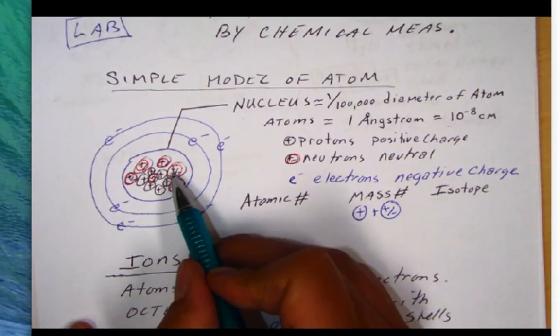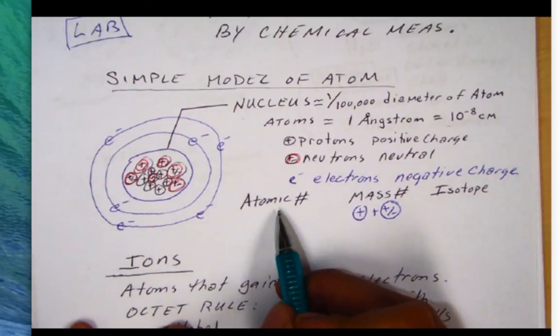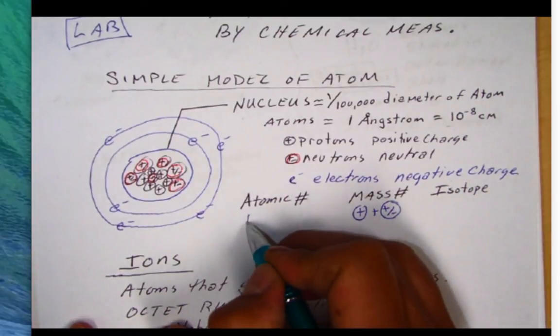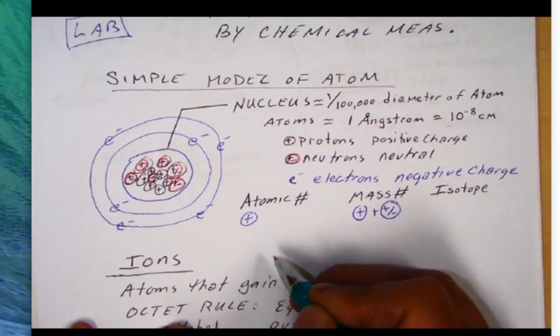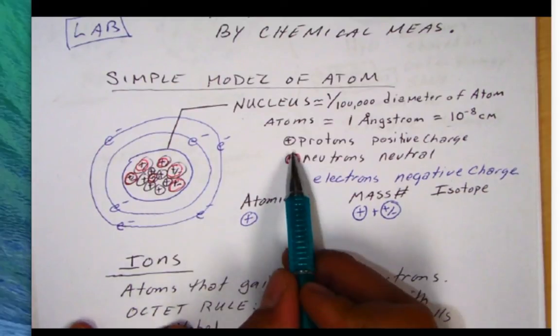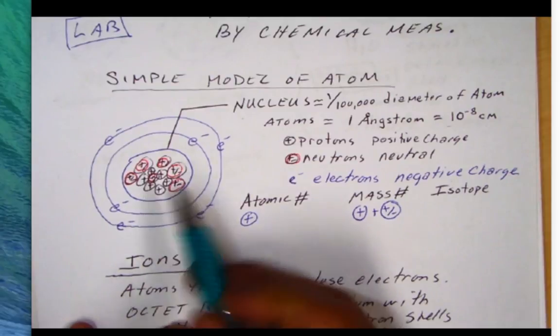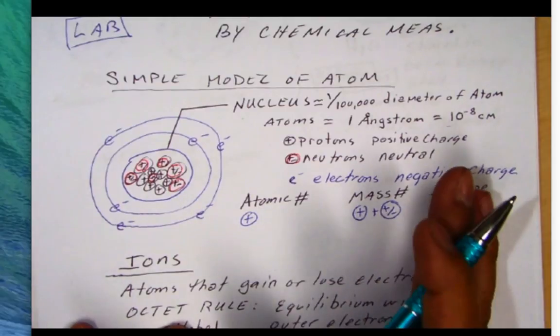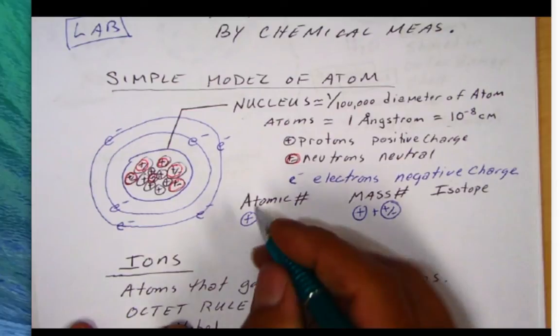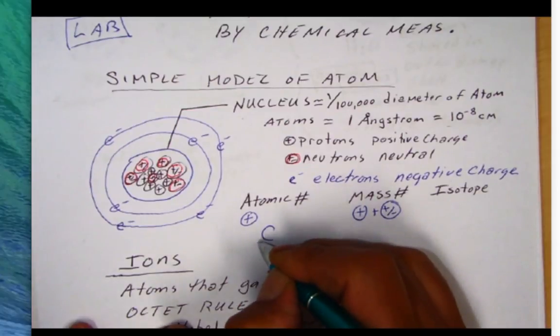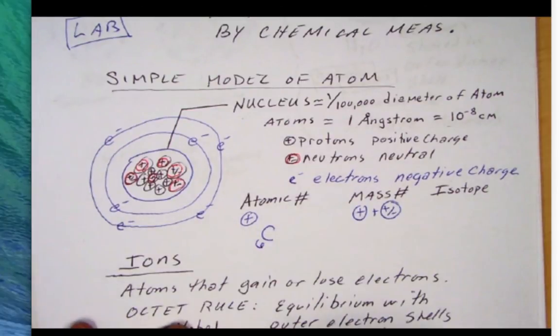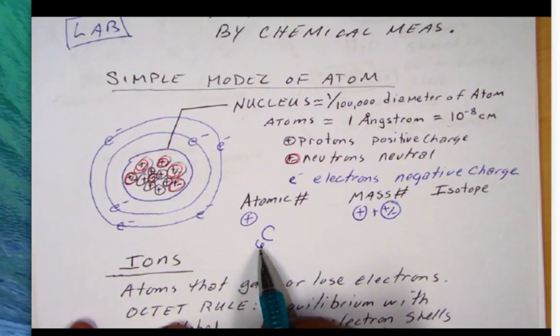Another important number is the atomic number. This is just the protons in the nucleus. You count those, only the protons. In this case, my protons here are in black, and I got one, two, three, four, five, six. So I know that atomic number six is the element carbon. By convention, we always put the six as a subscript before the chemical symbol.